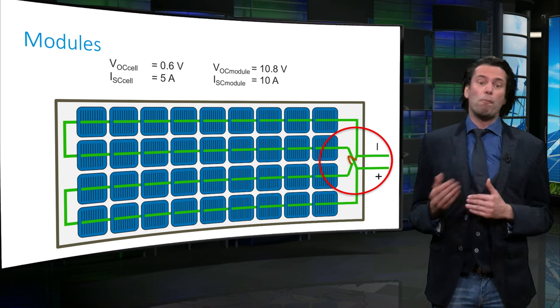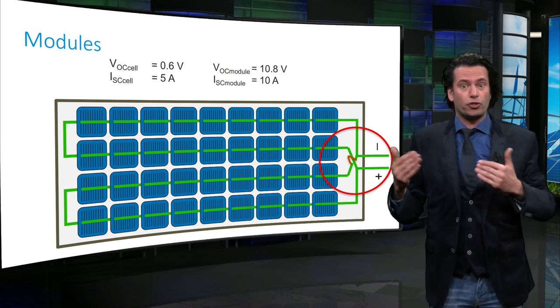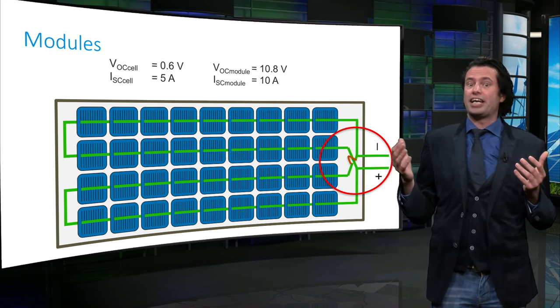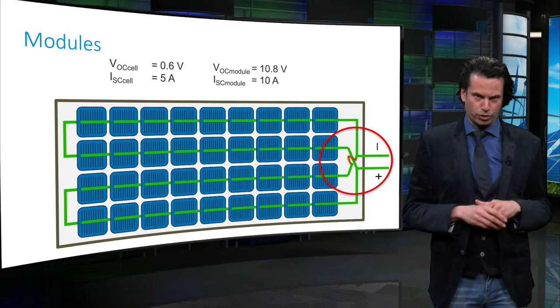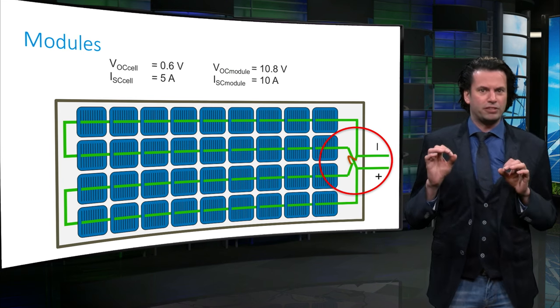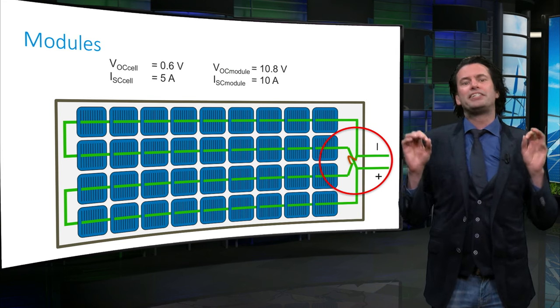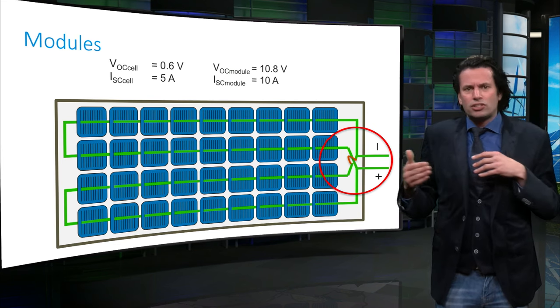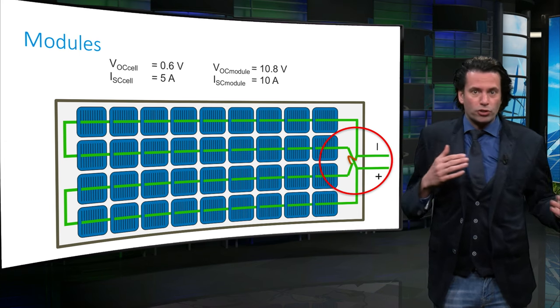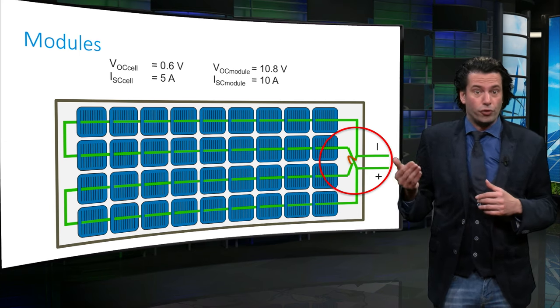The product of the open-circuit voltage and the short-circuit current are roughly equal to 108W in both modules. However, the specifications of the module are different. This has to be taken into account when selecting the other components of the system, such as the inverter or the battery.